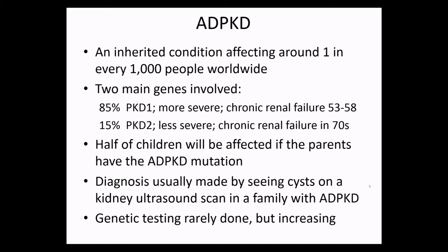First, an introduction to ADPKD. It's an inherited condition affecting around one in every thousand people worldwide. So if you're in London and you've been on the tube today, there will be somebody with ADPKD on it — it doesn't matter if you're in Beijing, Barrow-in-Furness or Berlin. It's caused by mutations in two main genes — a third one has recently been described but it's very small print. The commonest is called PKD1, polycystic kidney disease gene one, affecting 85% of all cases. It's a more severe gene leading to chronic renal failure at age 53 to 58. The other one, PKD2, is less severe, affects 15% of people with ADPKD, and tends to cause problems later in the 70s or may never actually cause renal failure in some.